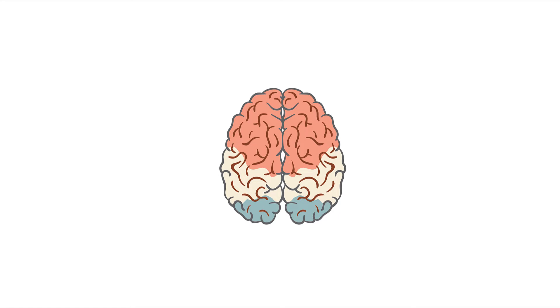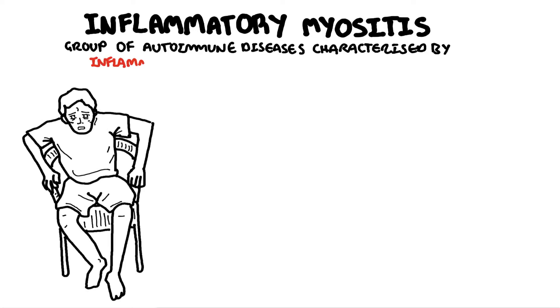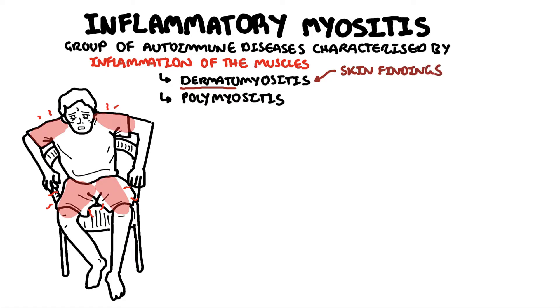In this video we're going to talk about inflammatory myopathies, or myositis. These are autoimmune diseases characterized by inflammation of the muscle, leading to muscle weakness and atrophy. The two most commonly recognized types are dermatomyositis and polymyositis. These typically present with proximal muscle weakness involving the shoulders and hips. The difference between the two is that dermatomyositis also has skin changes — hence 'derm,' as in dermatology, the skin.